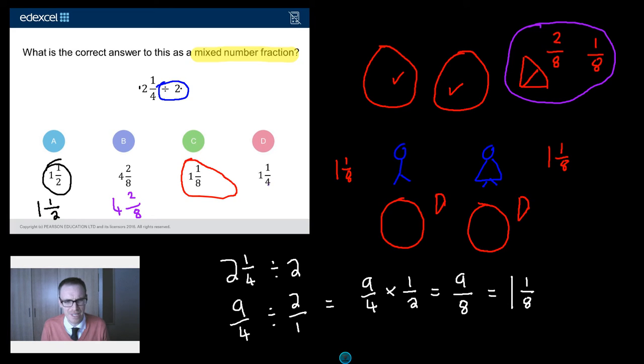C was the right answer. What about D? One and a quarter. What have they done here? Well, I reckon what's gone on here is they've done two divided by two. So they've sorted the whole numbers out and then thought, just give the fractions a miss. Just leave that as a quarter. Classic mistake. If you do that, that's what happens. You just end up with one whole and one quarter.